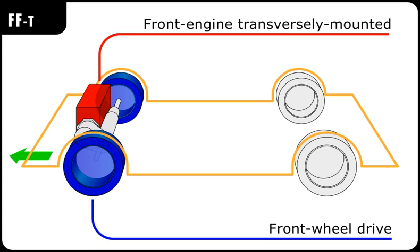Dante Giacosa's Autobianchi Primula of 1964, Fiat 128, and Fiat 127 put the transmission on one side of the transversely mounted engine and doubled back the drivetrain to put the differential just behind the transmission, but offset to one side.